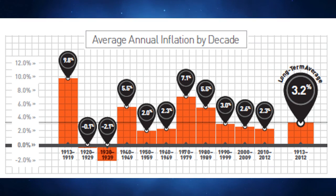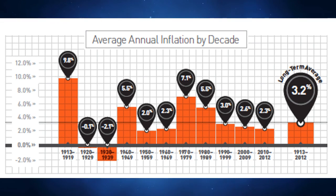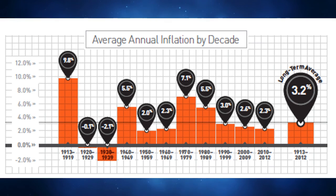If we're looking at someone about to retire now, they would have started planning, hopefully, between 1930 and 1939. Looking at the math, their long-term average inflation rate would be 3.2 percent.